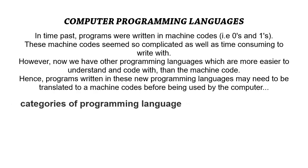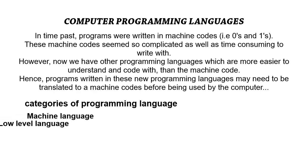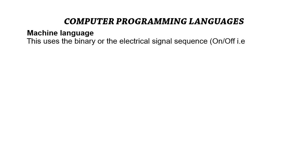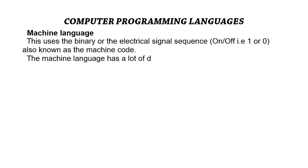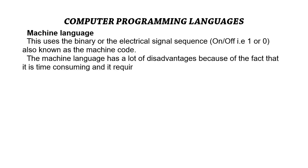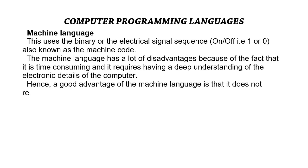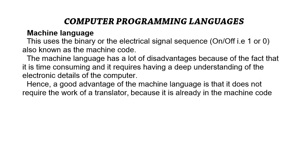There are three categories of programming language: machine language, low-level language, and high-level language. Machine language uses binary or electrical signal sequences — ones and zeros — also known as machine code. A major disadvantage is that it is time-consuming and requires a deep understanding of the electronic details of the computer. However, an advantage is that no translator is needed, since the code is already in machine code which the computer understands and can execute directly.